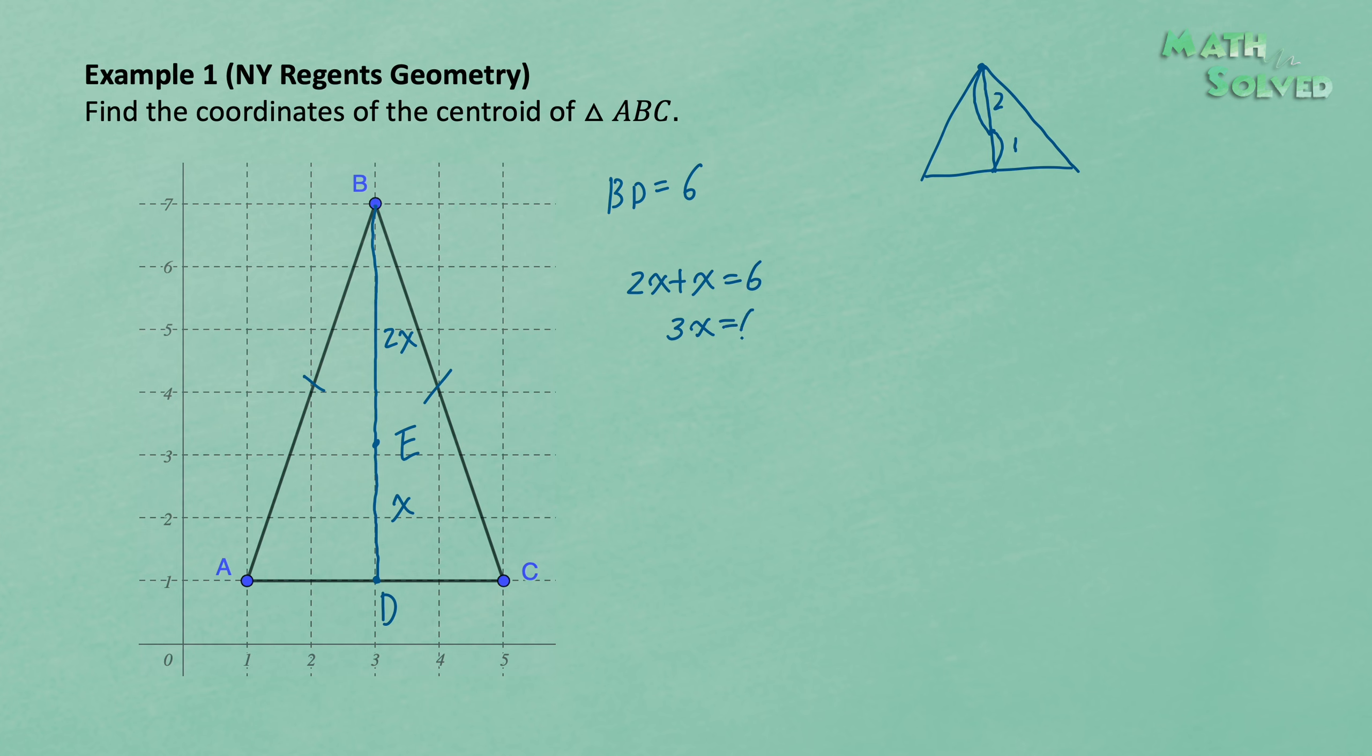And therefore, 3X is equal to 6, X is equal to 2. Now, X is equal to 2, so you go up from point D by 2 units. And therefore, point E actually should be here. It should be exactly at the grid point.